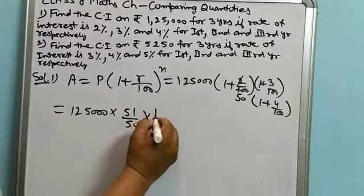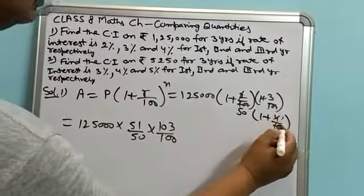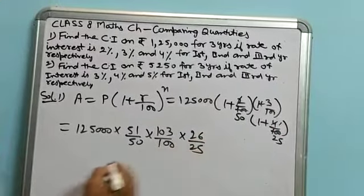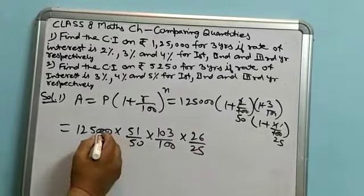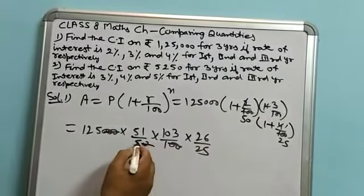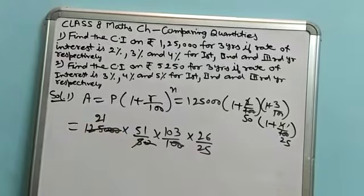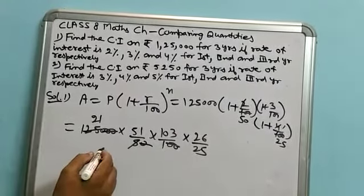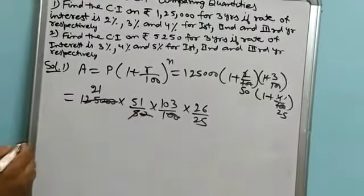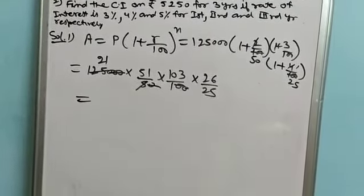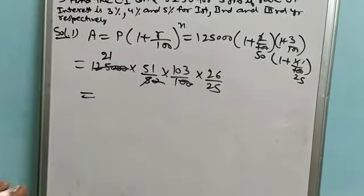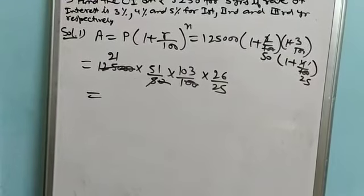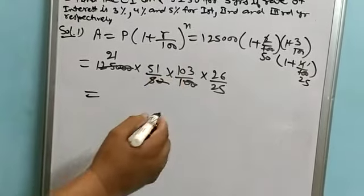Simplifying the fractions: 51 by 50, 103 by 100, 26 by 25. Now canceling common factors: 2's are 10, 5, 1's are 5. This gives us 26, 51 by 100.